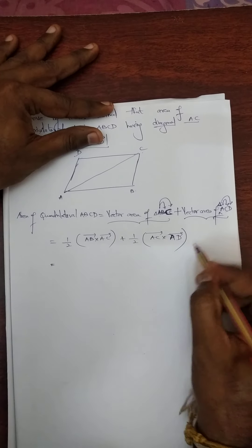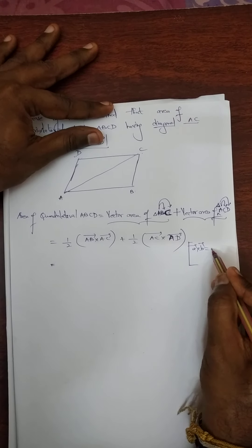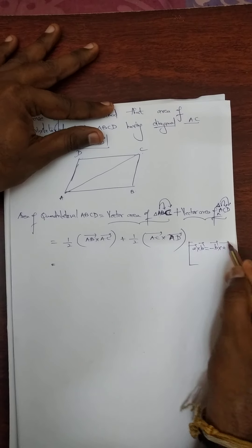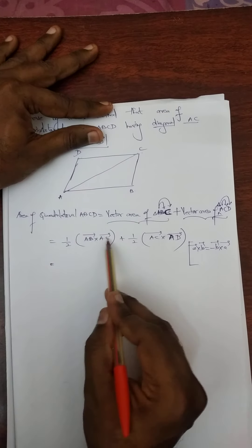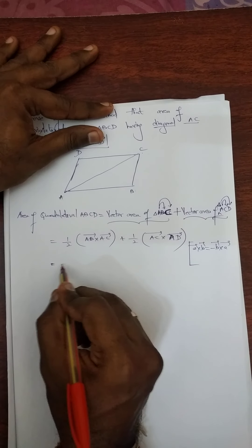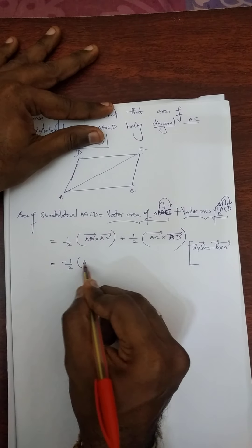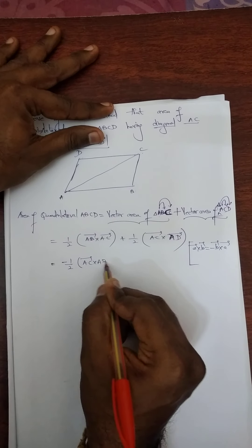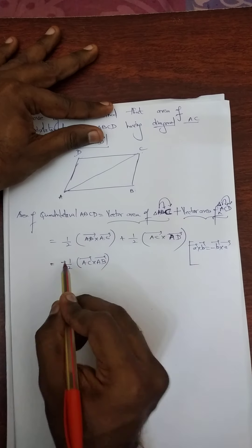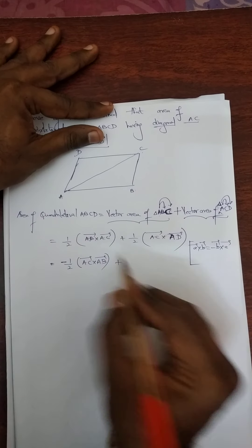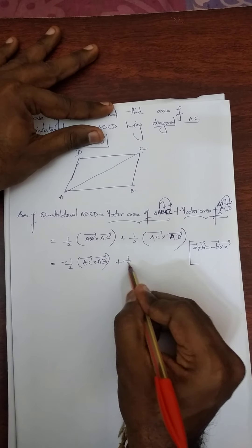Now you know the formula: A vector cross B vector is equal to minus B vector cross A vector. So if I am going to interchange this one, I am going to get a minus. So this minus I am going to put outside — AC vector cross AB vector — I need AC and AC common.